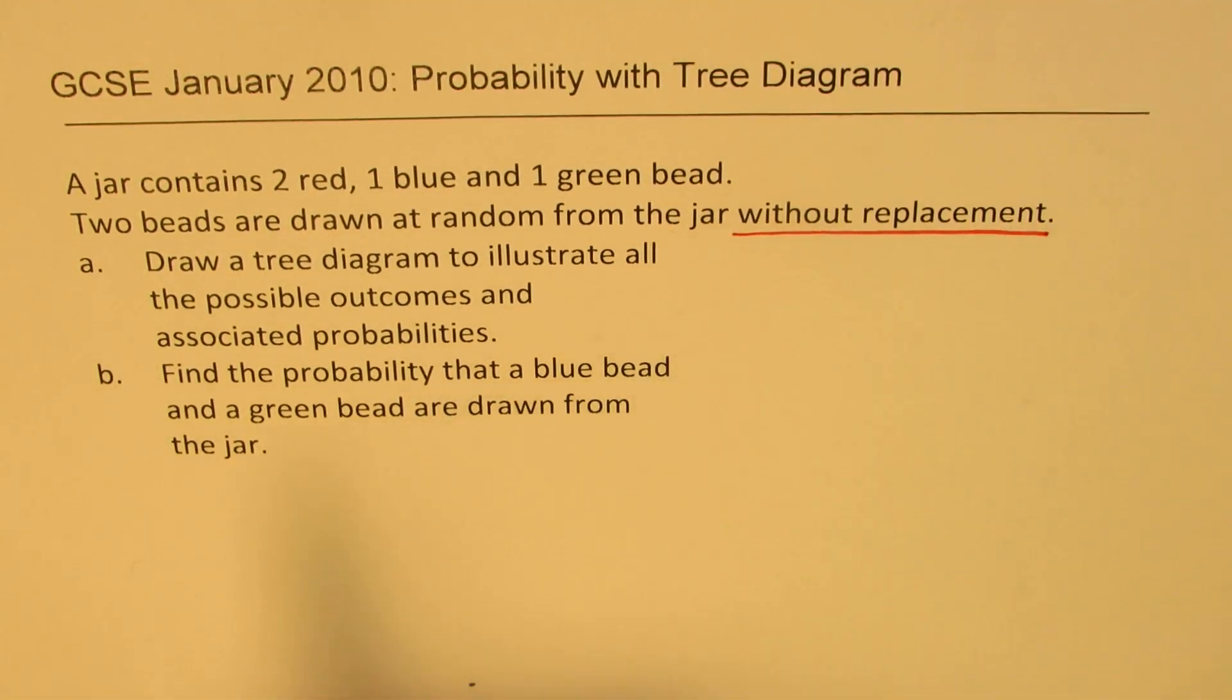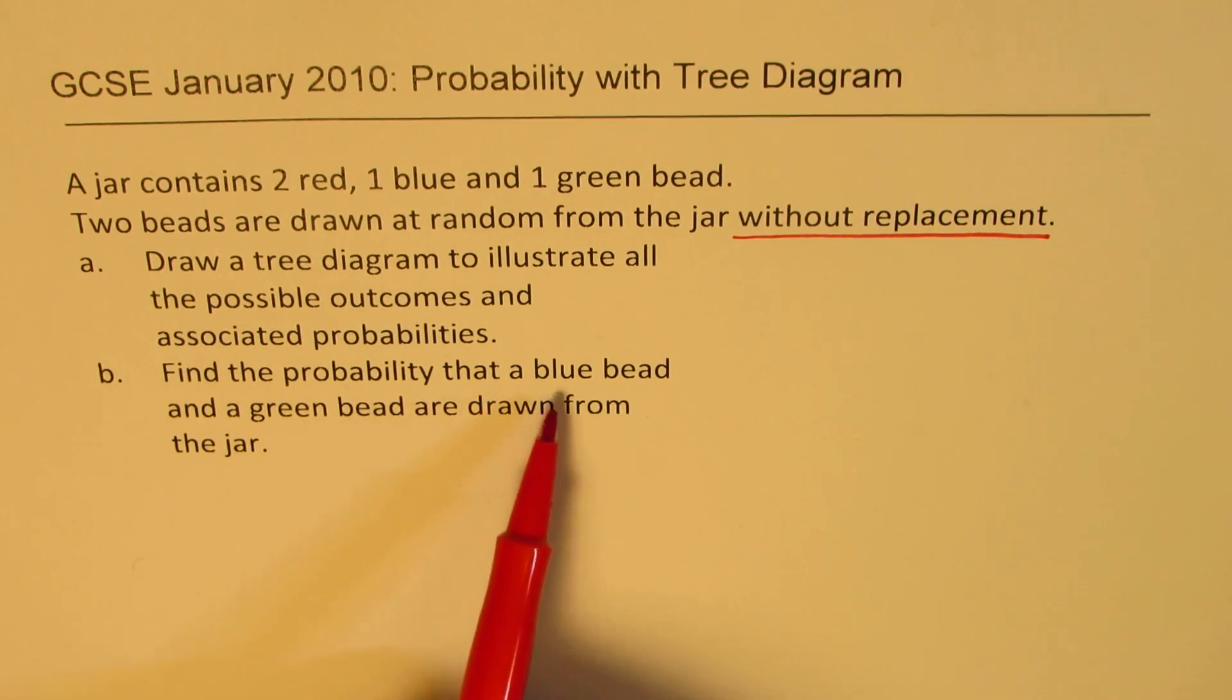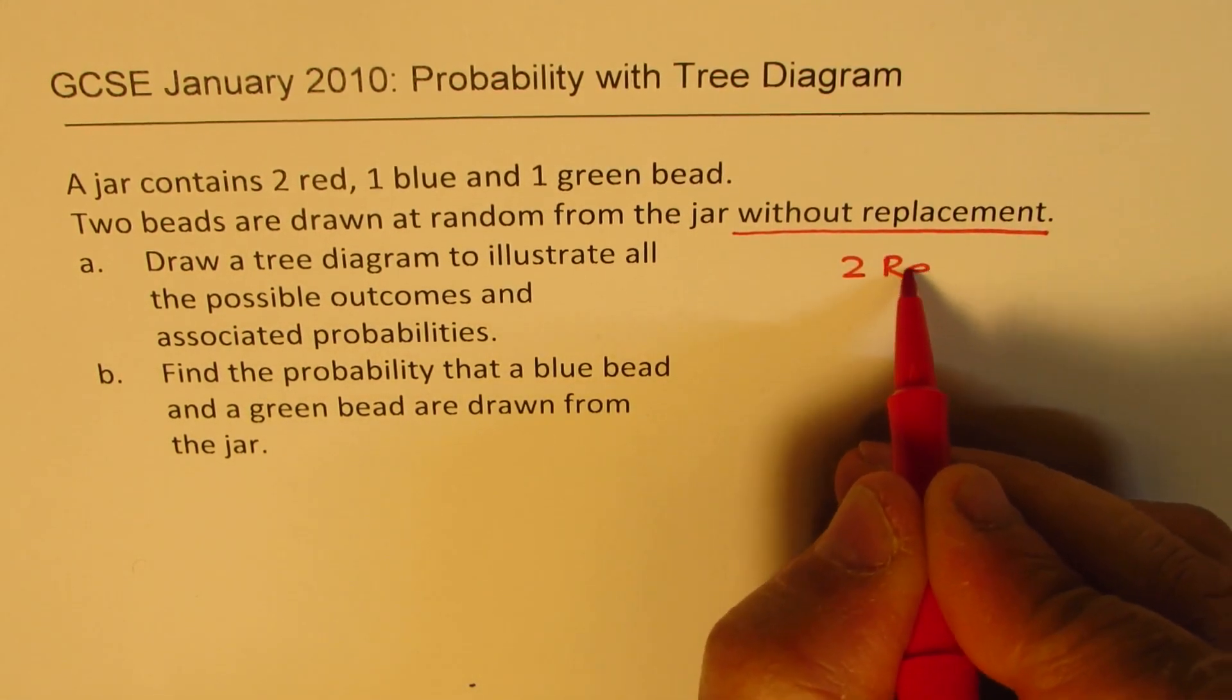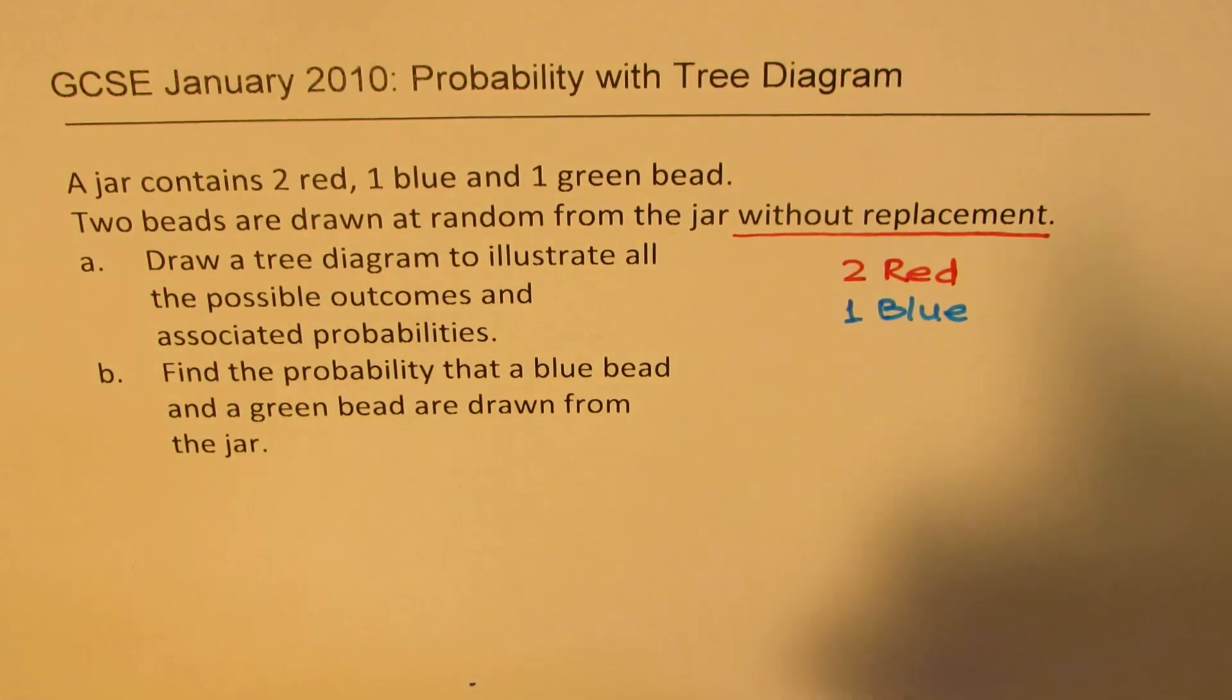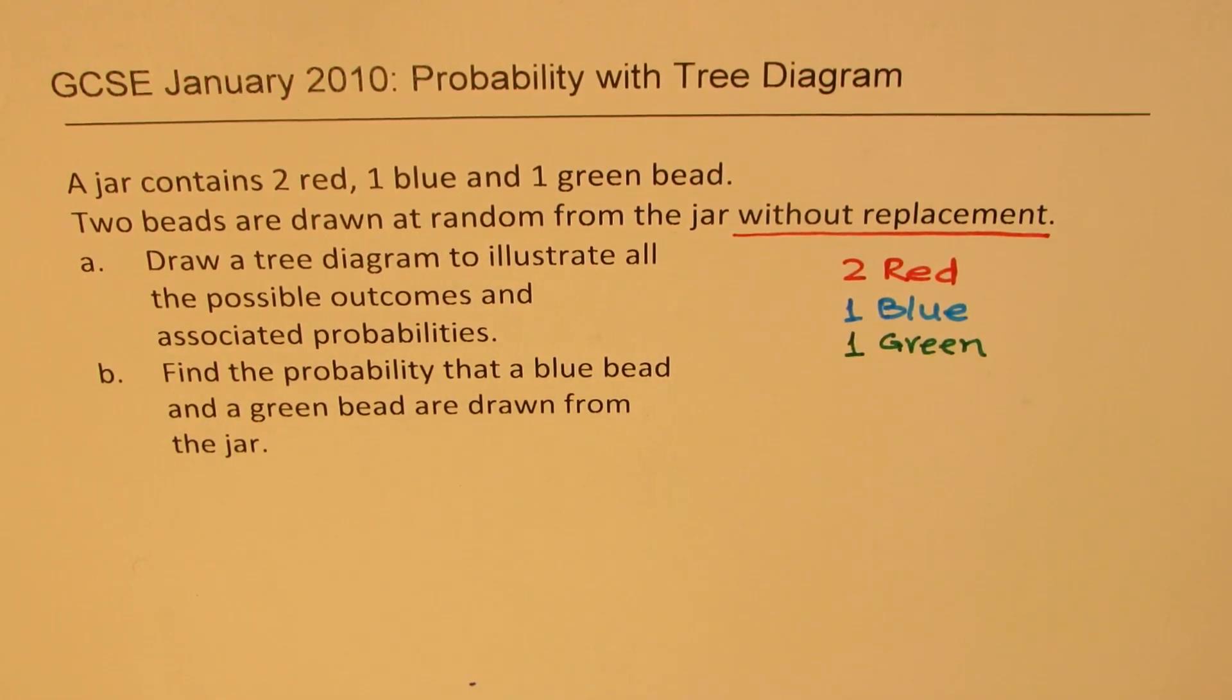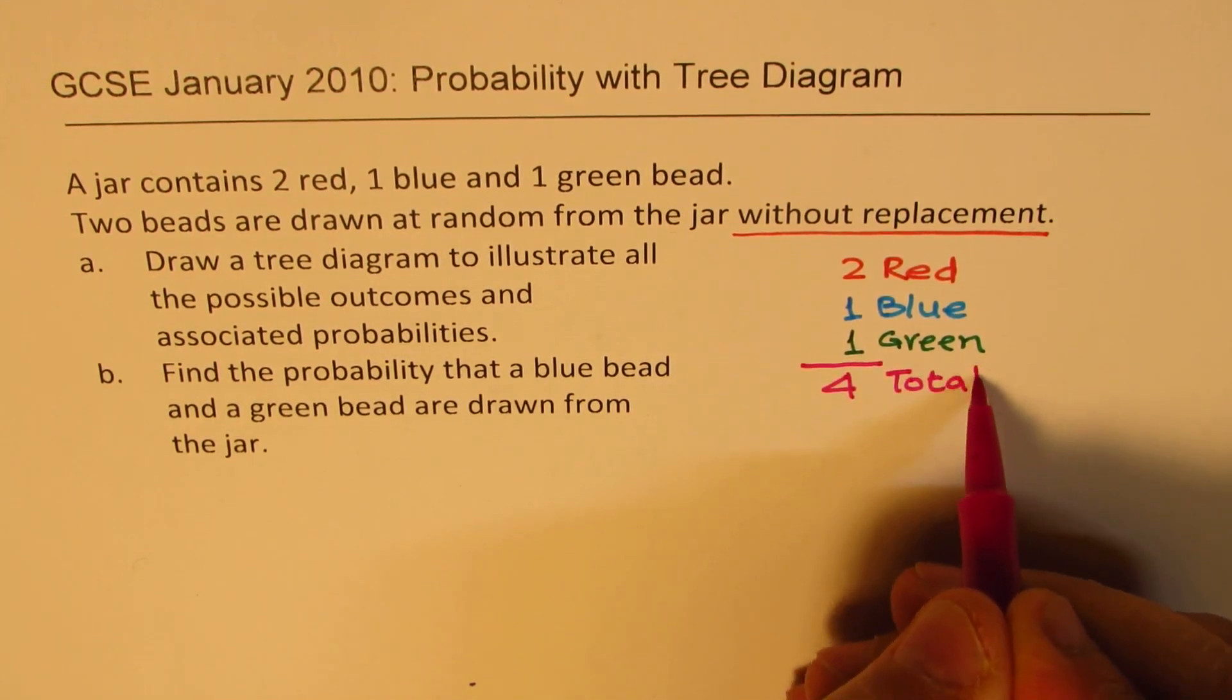Part a: Draw a tree diagram to illustrate all possible outcomes and associated probabilities. Part b: Find the probability that a blue bead and a green bead are drawn from the jar. Let's carefully look into what we are given. We are given two red, one blue, and one green. What is the total? That is your denominator most of the time - we have four total.